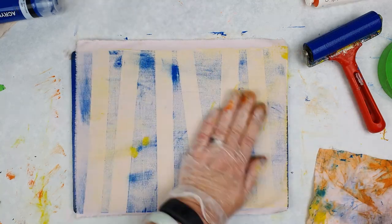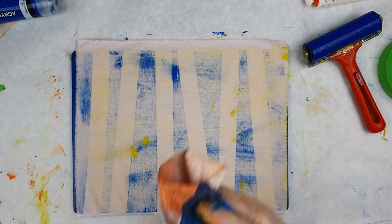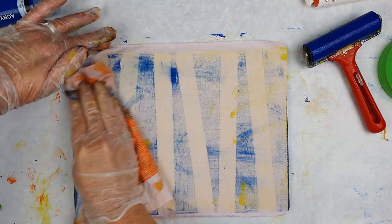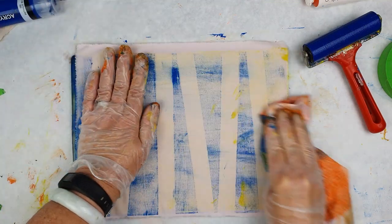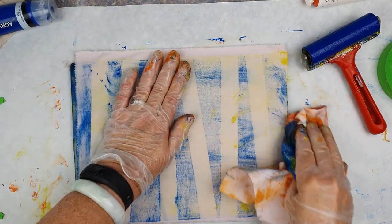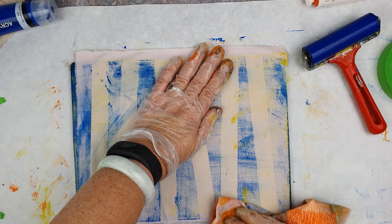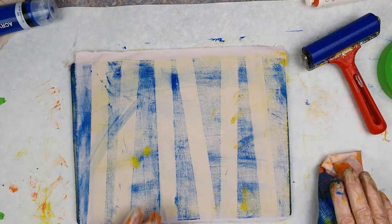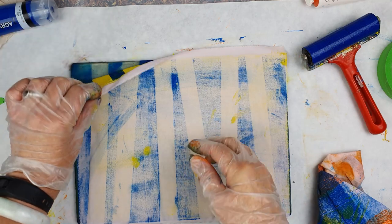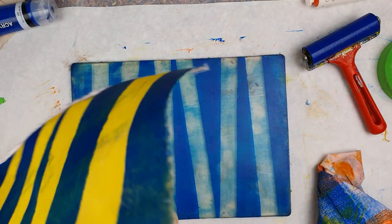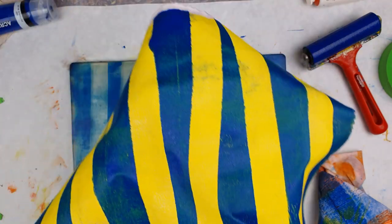This is where phthalo blue is an advantage rather than a disadvantage. I've got very good coverage on this from those blues. You can see how strongly it's coming through the back of the fabric. Yeah, brilliant bold stripes there.